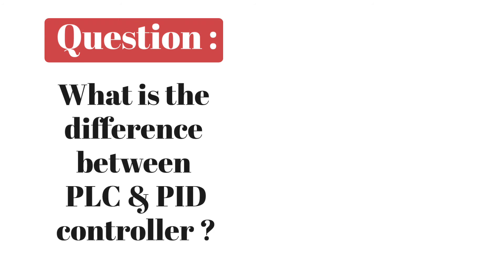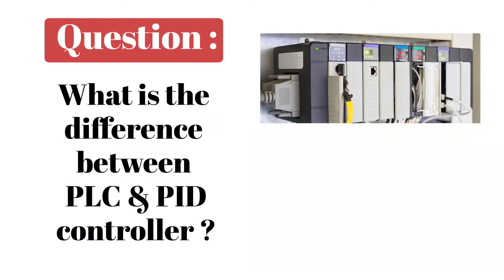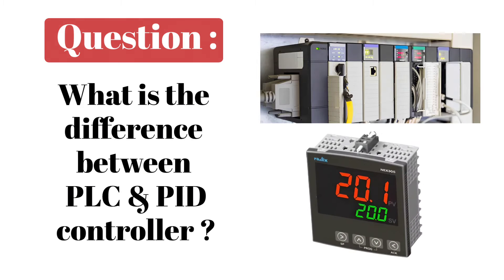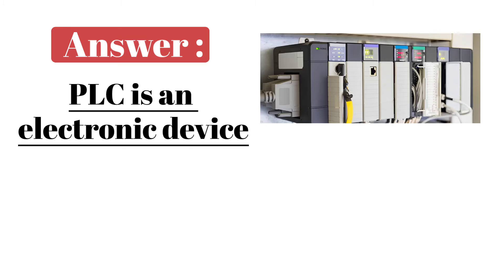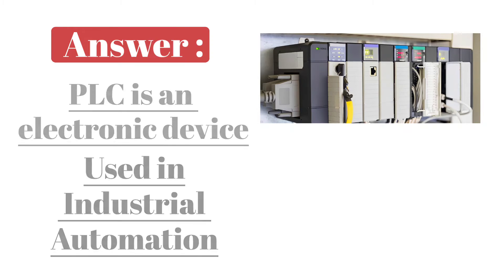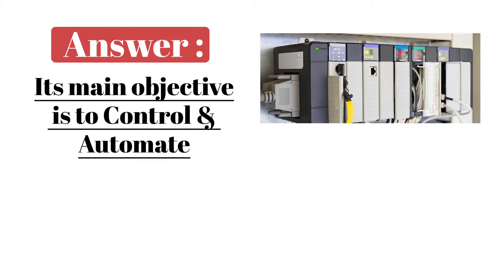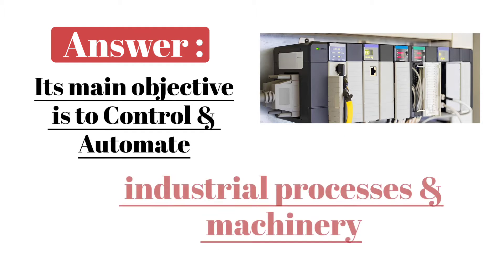Next question is, what is the difference between PLC and PID controller? Answer is, PLC is an electronic device which is used in industrial automation. Its main objective is to control and automate industrial processes and machinery.